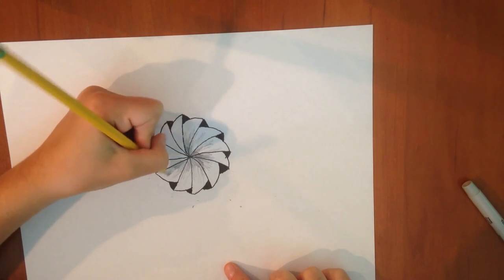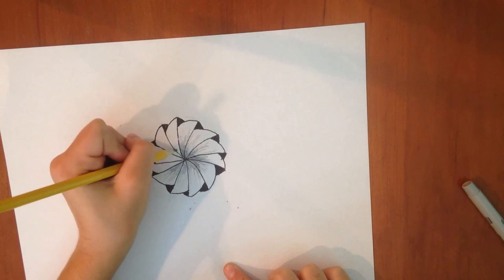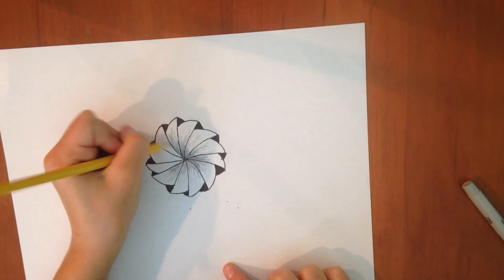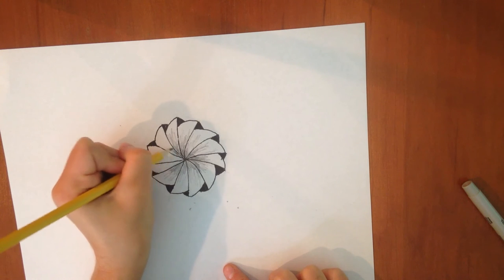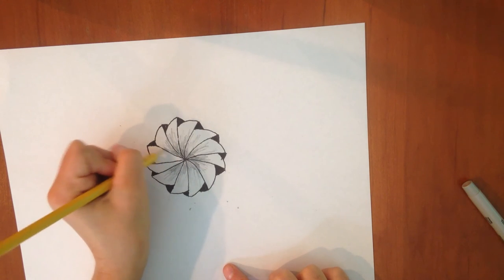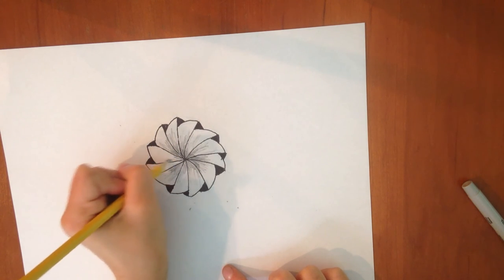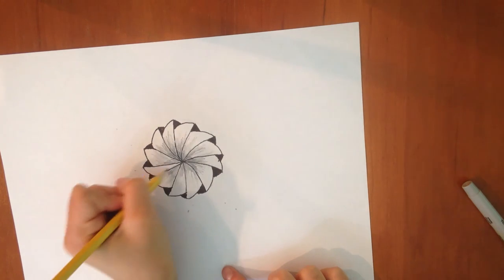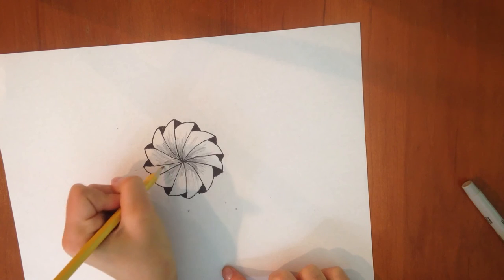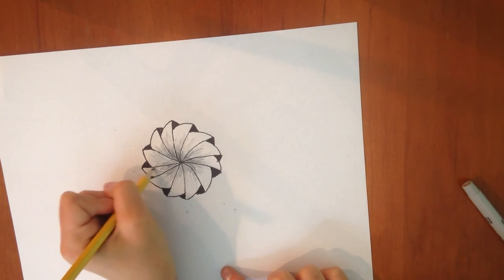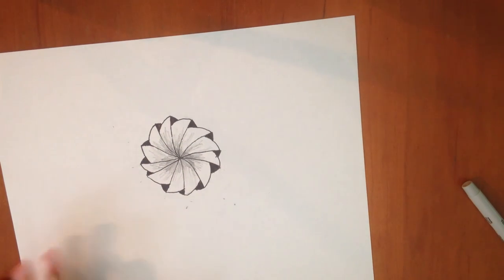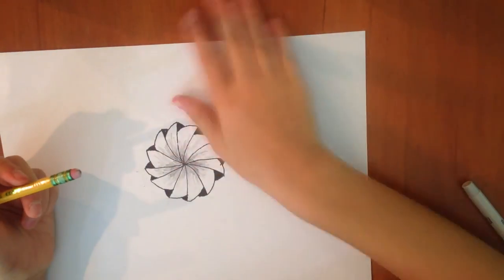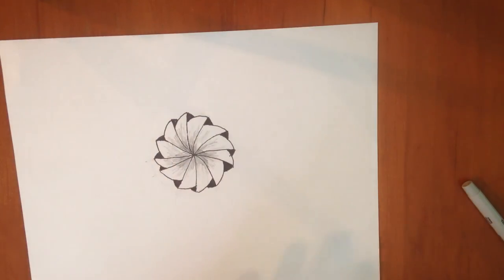This isn't great shading. I hope you're doing a little bit more careful than I am about this. Alright, that is your 3D spiral type thing.